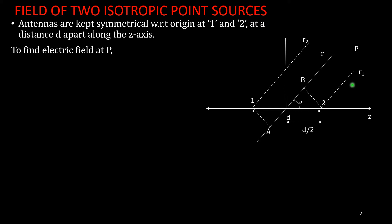From the figure, it is clear that the signal from the second antenna will reach point P first, and then the signal from the first antenna arrives, because the first antenna's signal has to travel more distance. This means there is a path difference between the signals from both antennas. That path difference is AO plus OB, where we project from each antenna to the reference line through the origin.